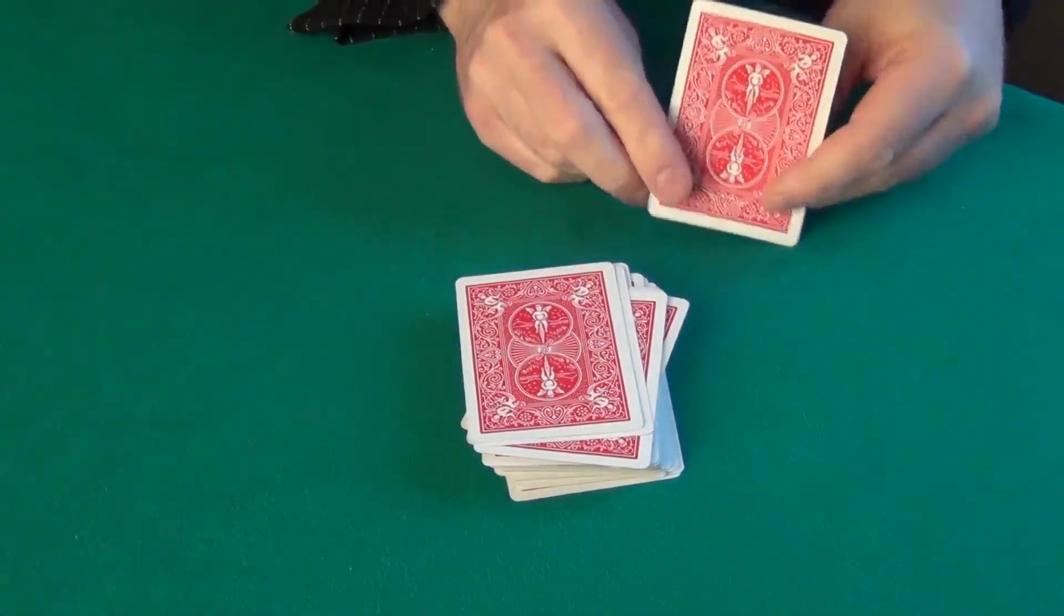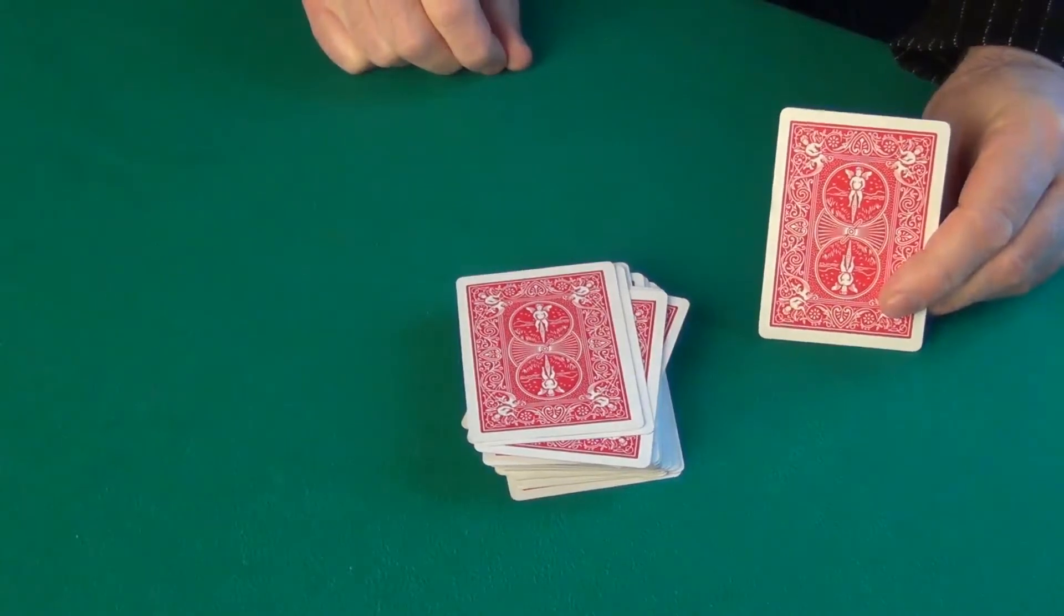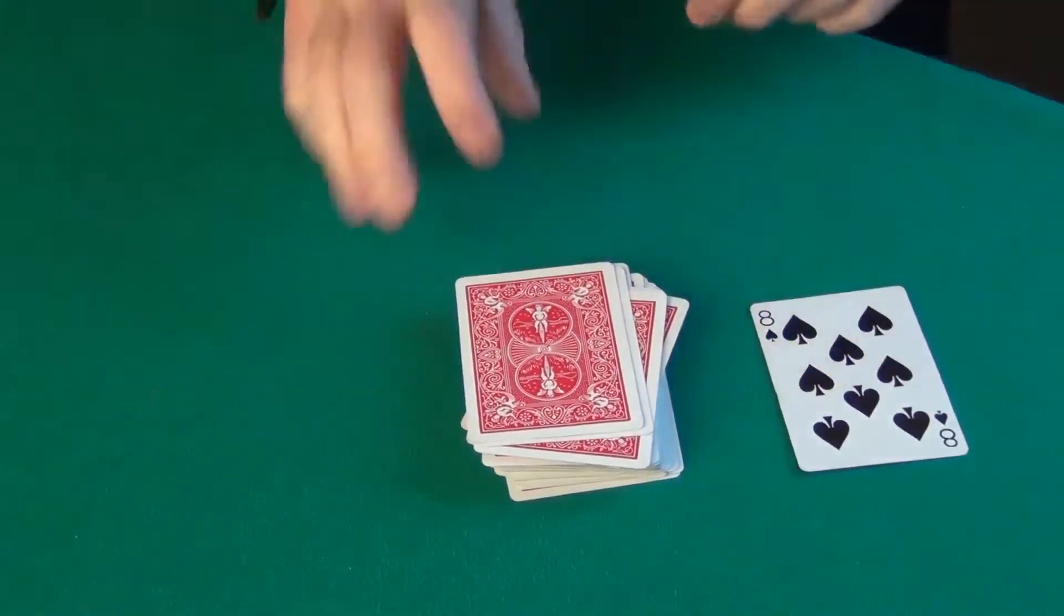One card left. What was your card? The Eight of Spades, not the Ten of Diamonds. That's good, because this is the Eight of Spades. You know, every card in the deck has a mate. In this case, you chose the Eight of Spades. So the Eight of Spades' mate would be the Eight of Clubs.